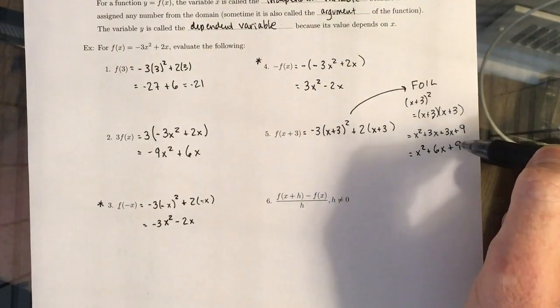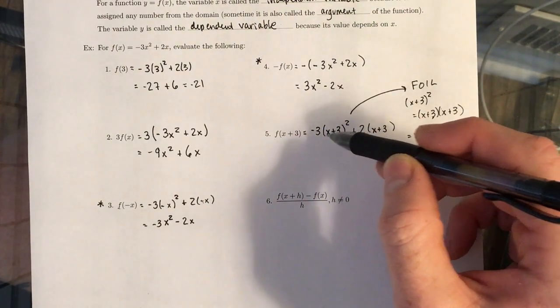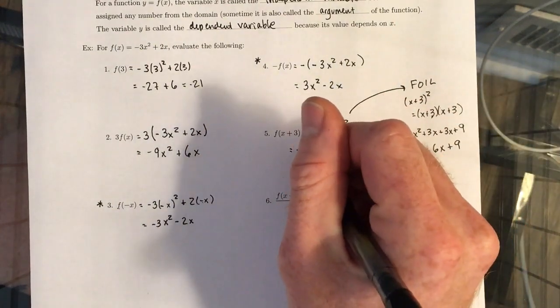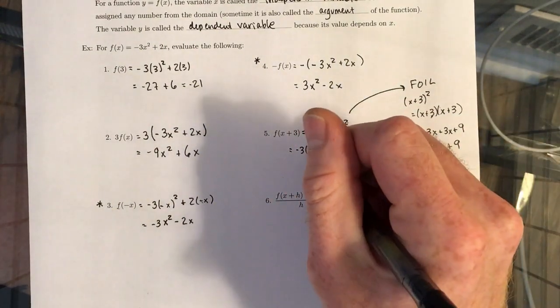So this right here is the X squared, or sorry, X plus 3 quantity squared. So we're going to substitute that in.